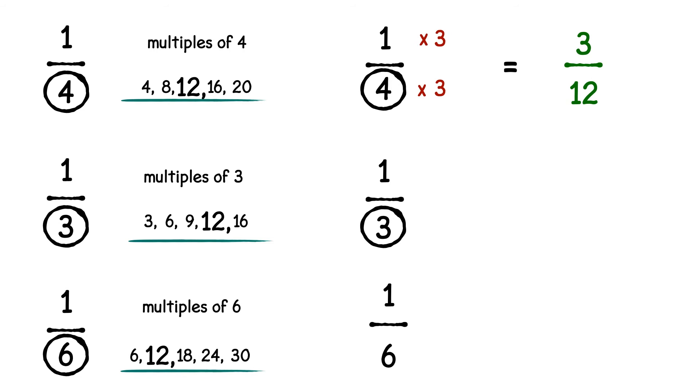The next denominator is three. What does that have to be multiplied by to make twelve? Four. So we multiply the numerator and the denominator of a third by four.